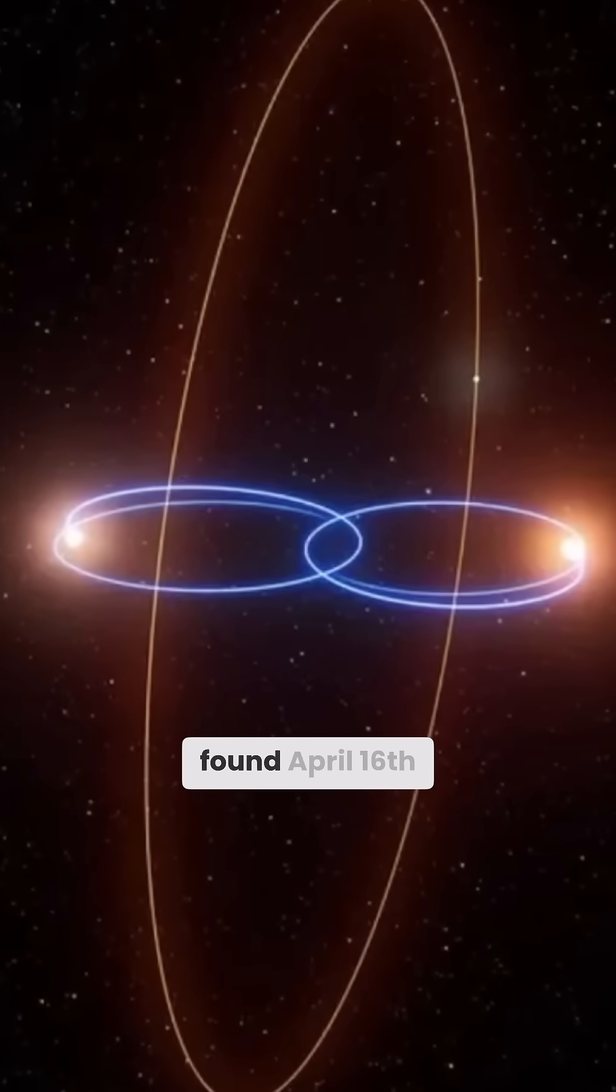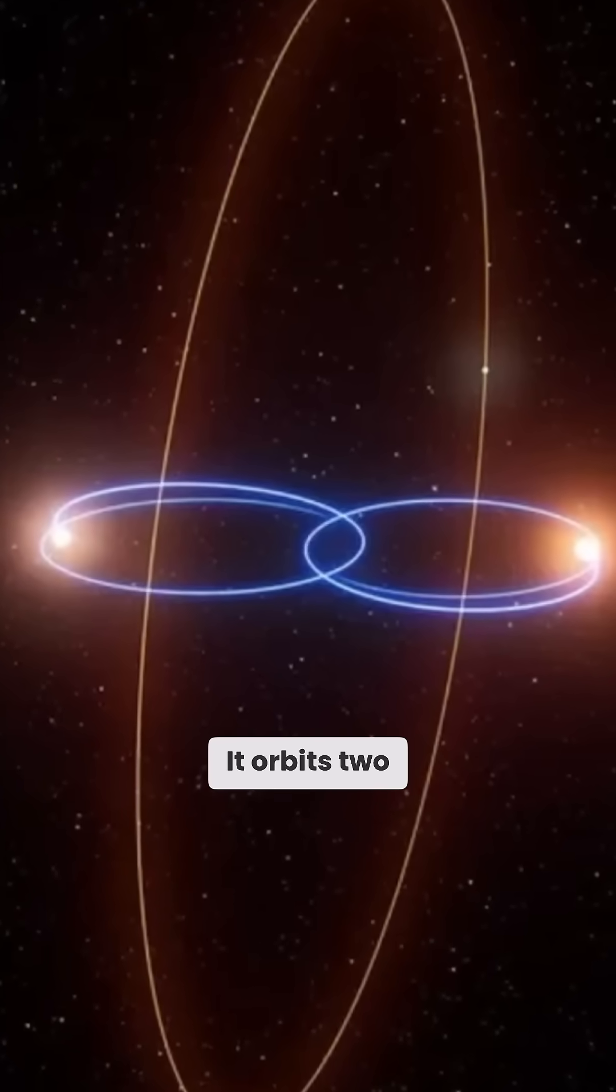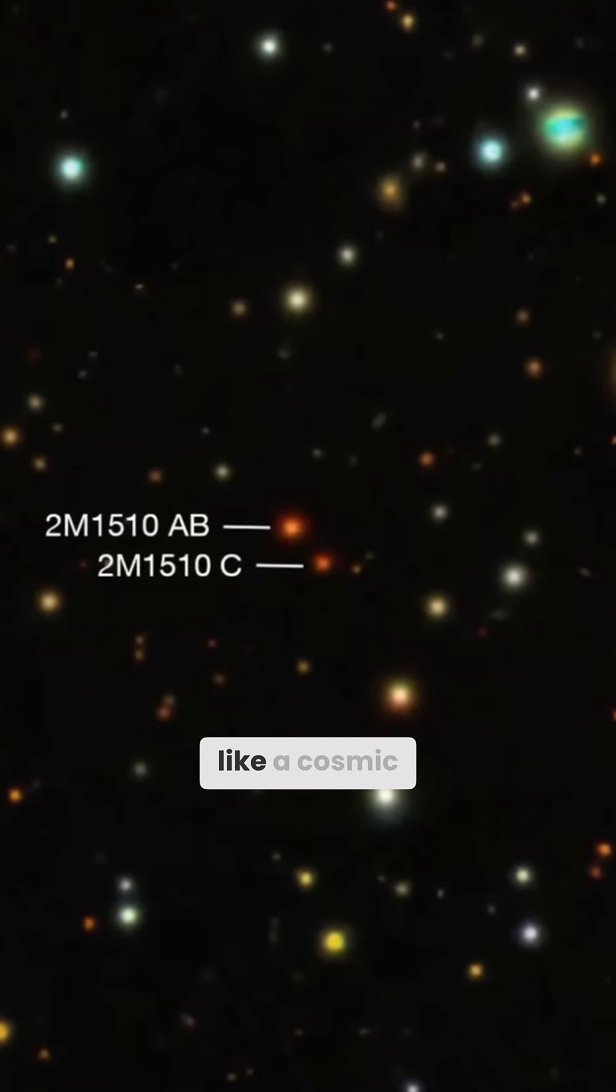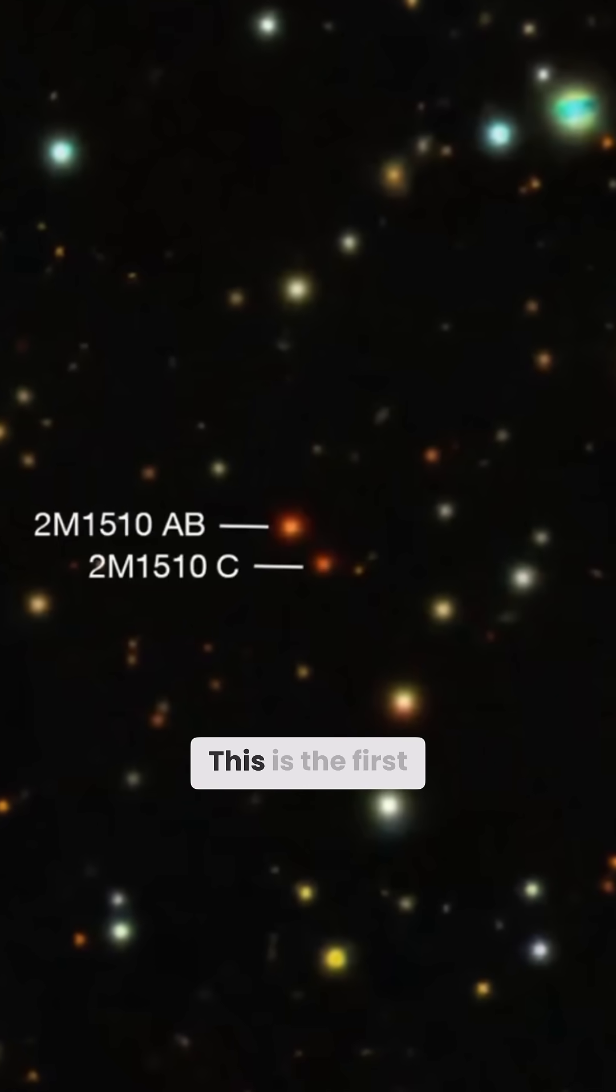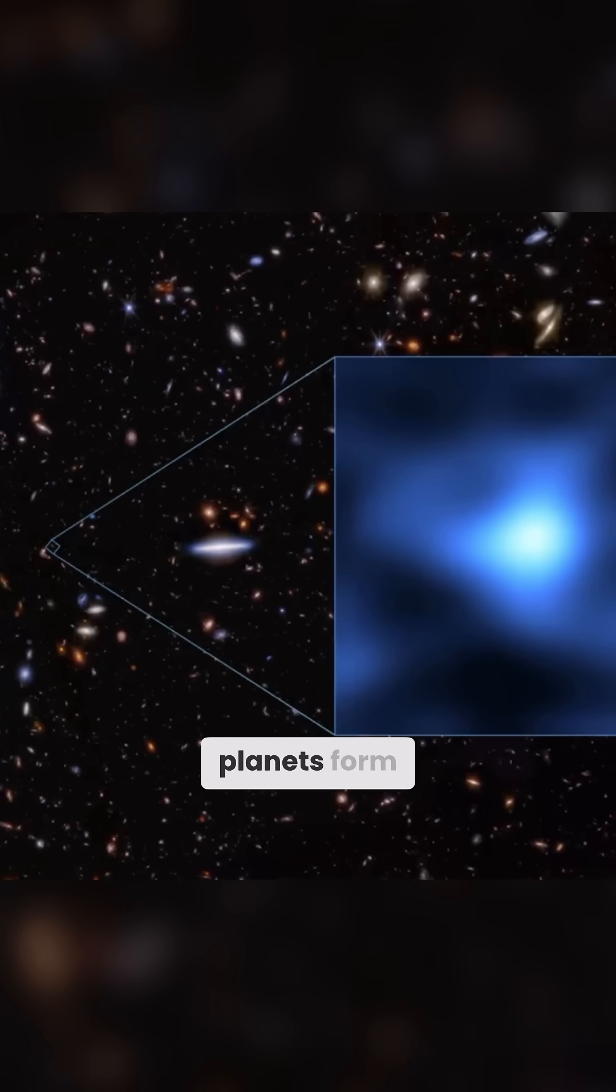First off, a polar planet found April 16th. It orbits two stars at a 90 degree angle like a cosmic roller coaster. This is the first ever and it's messing with how we think planets form.